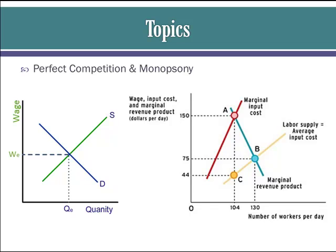In the assignment, you complete a chart to answer the first question. If you get stuck, marginal product of labor is found by subtracting the total product of one worker from the total product of the next worker. Total revenue is product times price. To find marginal revenue product, subtract the total revenue from one worker from the total revenue of the next worker.